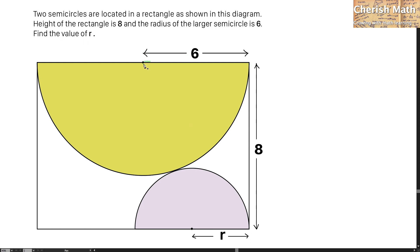I'm going to make a line connecting from the center of the larger semicircle to the center of the smaller semicircle. Another line connects from the center of the larger semicircle to the bottom of this rectangle.